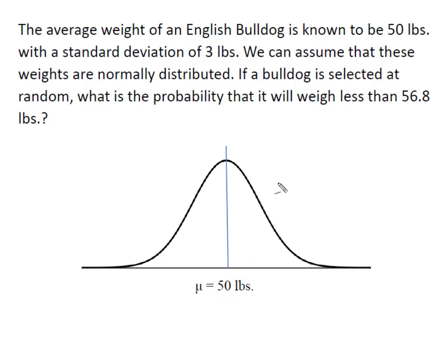I have my mean established here at 50, and now I'm going to find my value of x. I'm going to say that x is equal to 56.8 pounds, and I want the probability that it weighs less.